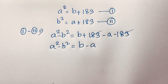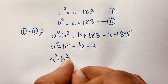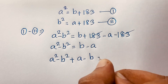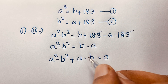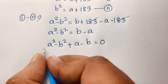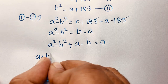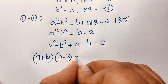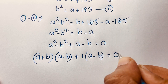So we have a squared minus b squared equals b minus a. Now, I can see that a squared minus b squared plus a minus b is equal to 0, since I move the b minus a to this side making it positive a minus b.